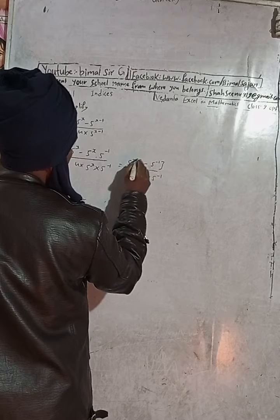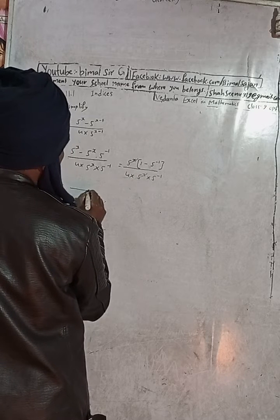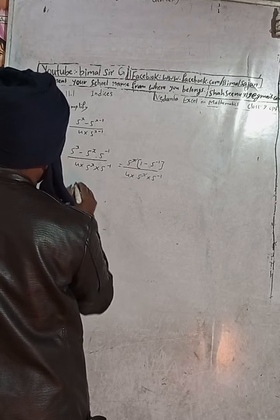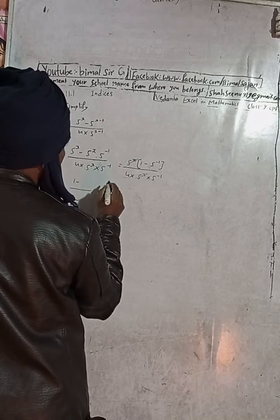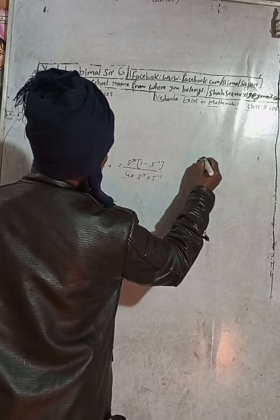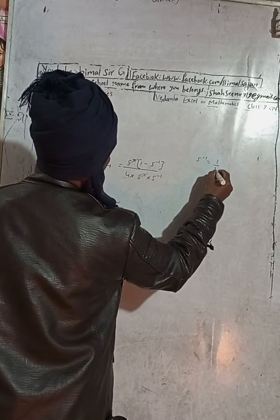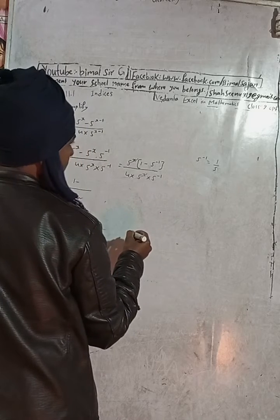So 5 to the power x, 5 to the power is cancelled. This can be written as here 1 minus, 5 to the power minus 1 can be written as 1 by 5. This is 1 by 5.